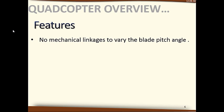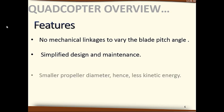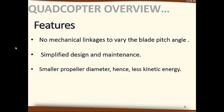One feature that distinguishes quadcopters from traditional helicopters is that quadcopters don't need mechanical linkages to vary the blade pitch angle for changing orientation and translation. Any orientation can be achieved simply by changing the speed of the rotors. Another feature is that their design and maintenance are simple — they can be assembled easily and parts are widely available at affordable prices.